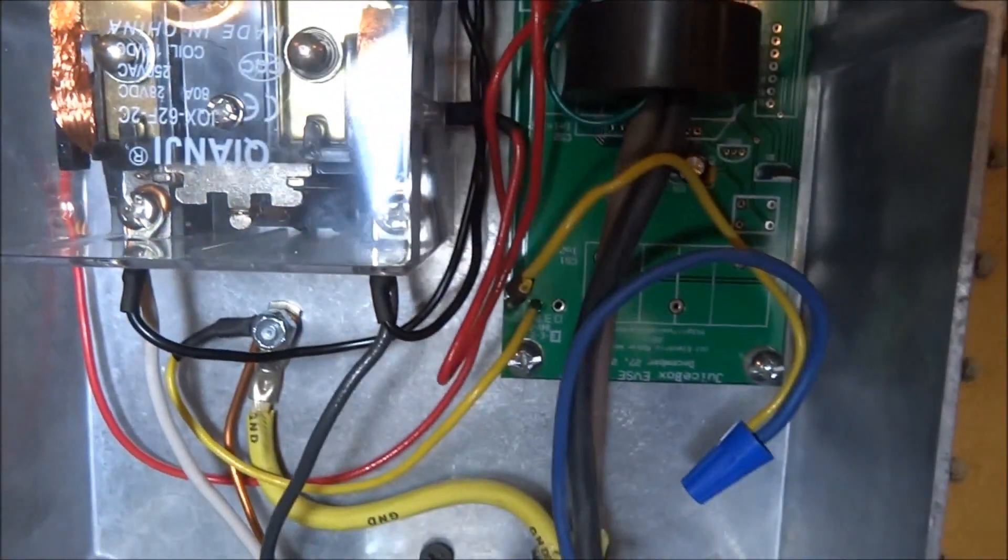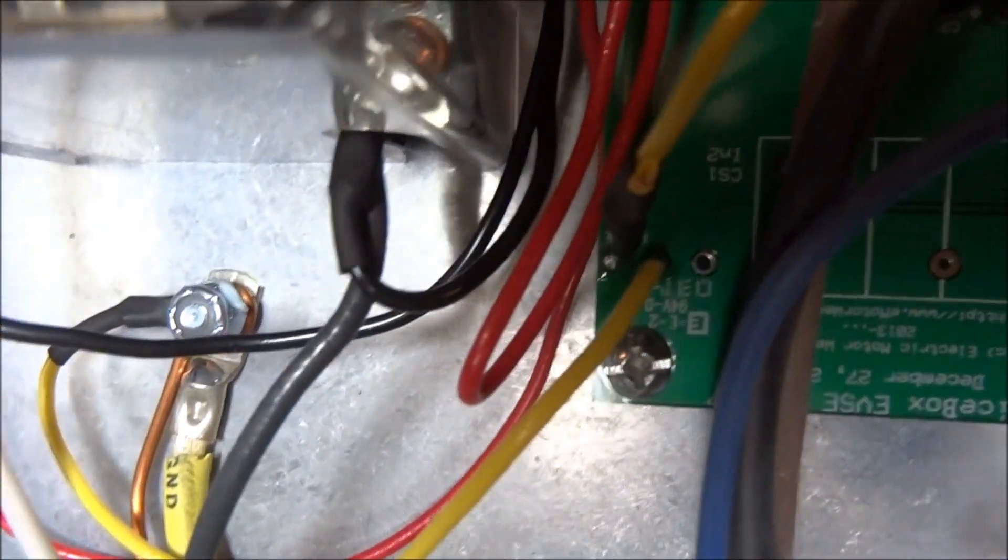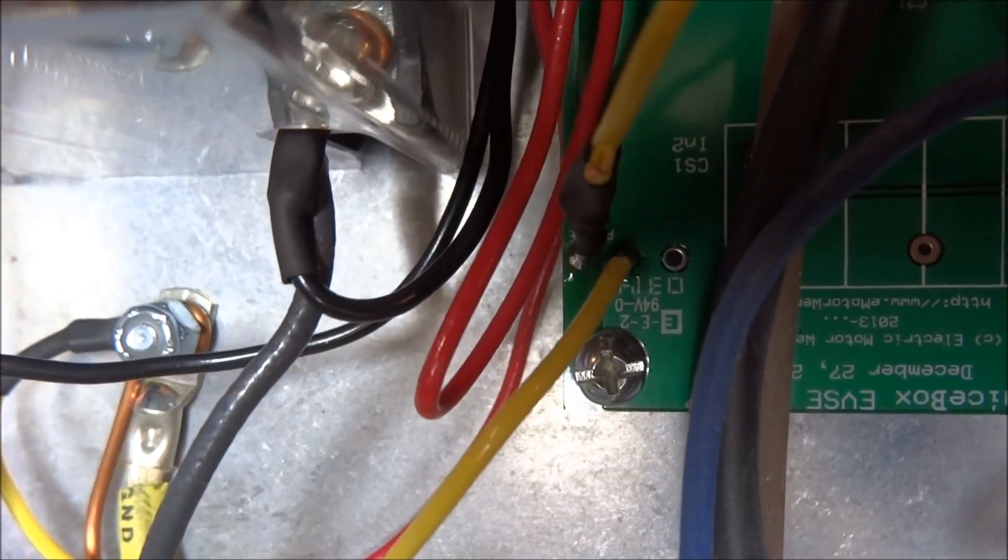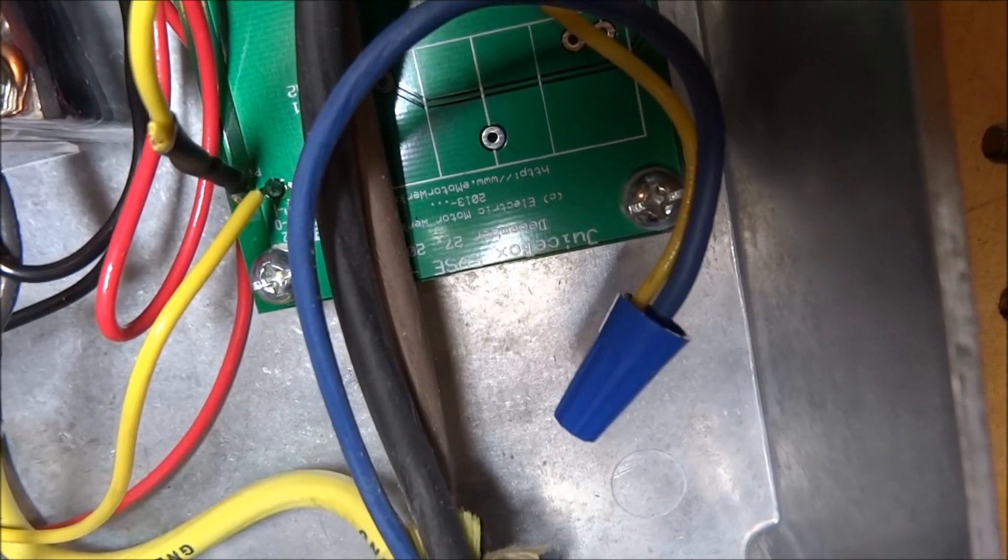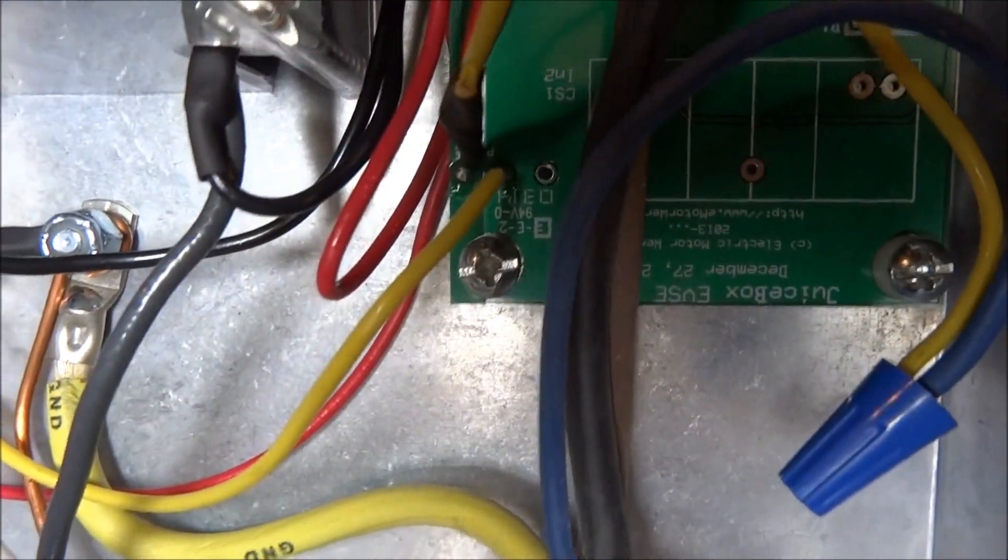And then the last two wires are the pilot wire, which is all the way to the left. And that we have twist tied with the one from the output to the car. The other yellow wire goes to your ground. That grounds the board.